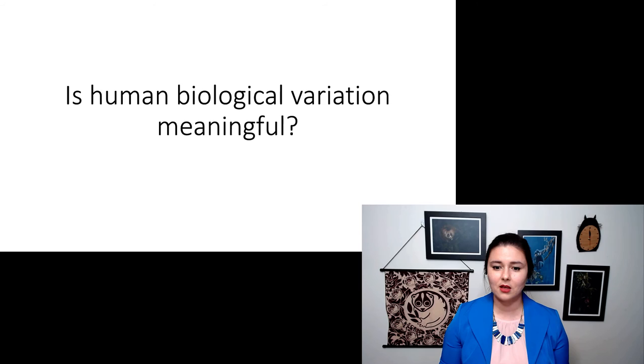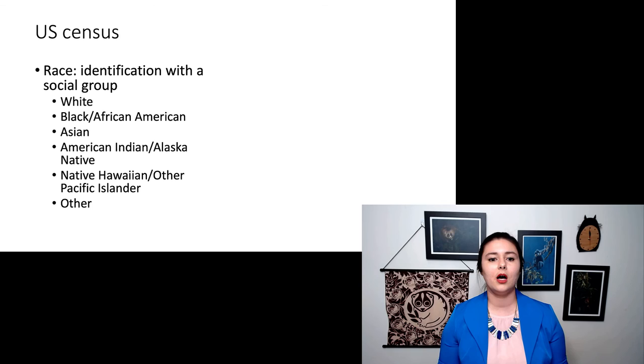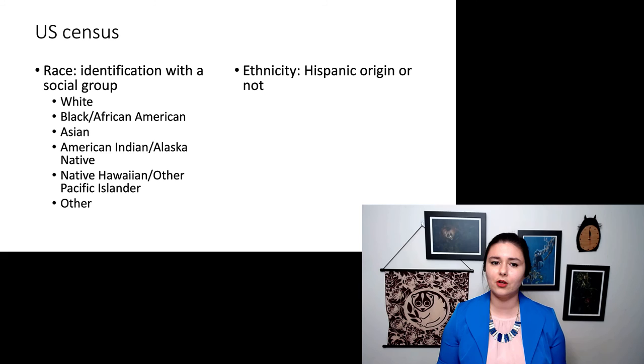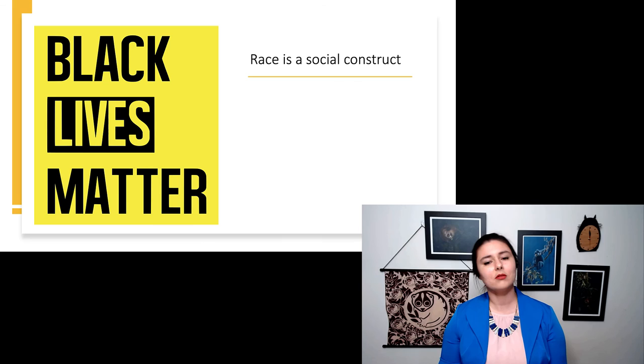Today the US Census still includes race as a part of this. So their groups are white, black or African American, Asian, American Indian or Alaska Native, Native Hawaiian or other Pacific Islander, and of course the lovely category of other. They also separately include ethnicity as Hispanic or not. Personally I don't find this classification system very helpful, but even though there is more and more information out there that race is a social construct, we're still seeing these categories persist today and people are forced to make a choice when we're filling out forms such as the census.